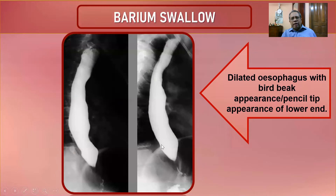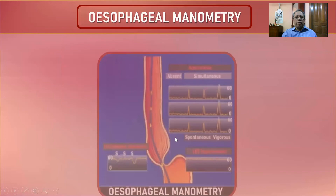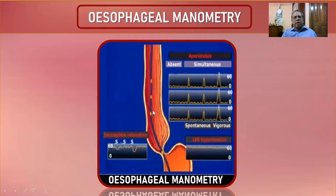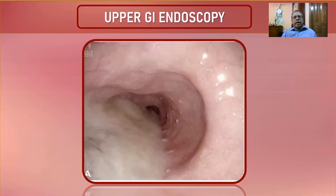On barium swallow the dilated esophagus with bird beak appearance is seen — pencil tip, smooth in outline. This smooth outline distinguishes benign achalasia from malignant esophageal lesions which have irregular outlines. Esophageal manometry graphically shows the lower esophageal pressure. On upper endoscopy, a widely dilated lumen with residual food material indicates obstruction — either from achalasia or malignancy.